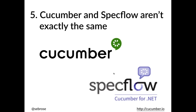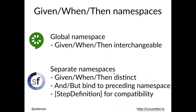Cucumber and Specflow come from the same background and both use Gherkin in exactly the same way, but they have slight differences. In Gherkin, all steps are introduced with a keyword — there are five keywords: given, when, then, and, and but. Within Cucumber, all step definitions live in a global namespace. Within Specflow, given, when, and then live in distinct namespaces. This is somewhat theoretical, but worth bearing in mind if you're in a team working in both Java and .NET.